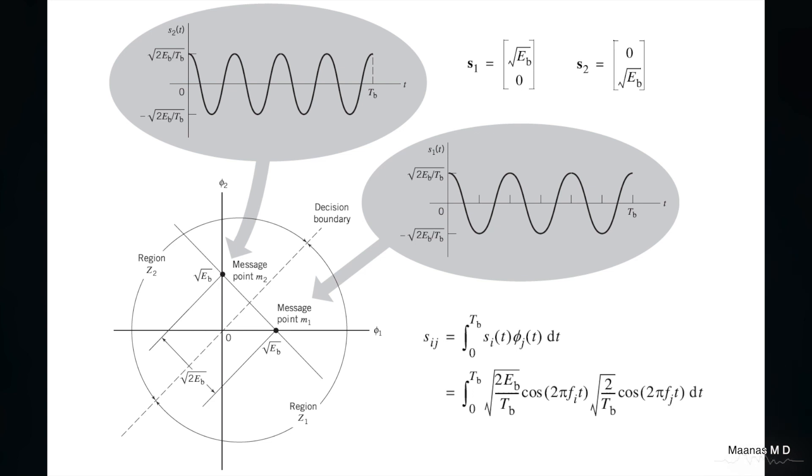On plotting this on an xy axis, or based on the basis function phi1 and phi2, we get that as both are orthogonal, symbol 1 is on phi1 axis, symbol 2 is on phi2 axis at a distance of root Eb from the origin. There is a decision boundary which is the x equal to y line or phi1 equal to phi2 line. The distance between the two symbols is root 2Eb. The regions of the symbols are shown in the constellation diagram.